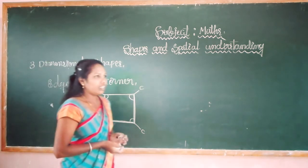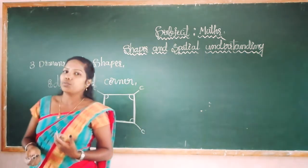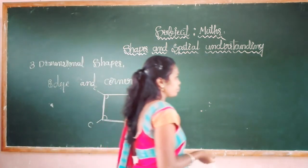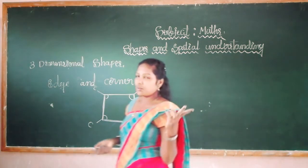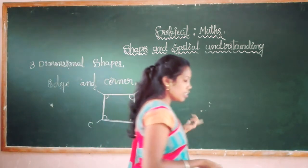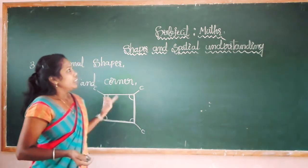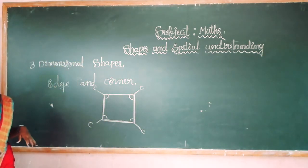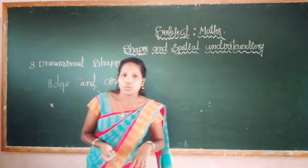In this lesson we learnt what is 3D shapes and similar objects for 3D shapes, and what is edge and corners. There are two kinds of edge — one is straight edge and the other one is curved edge. It is the last part of unit: shapes and spatial understanding. Thank you so much dear students.